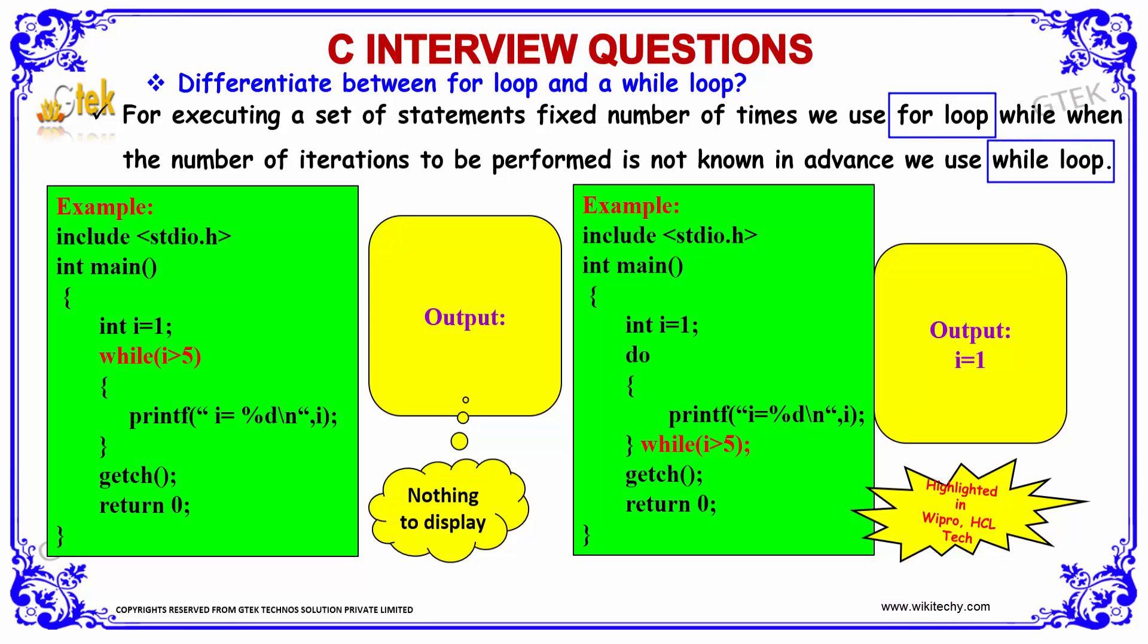So, we have the examples for for loop and while loop over here. Here, the header file declaration followed by the main function where you can see int i equal to 1 and we have the while statement while i greater than 5 and the printf statement over here. If